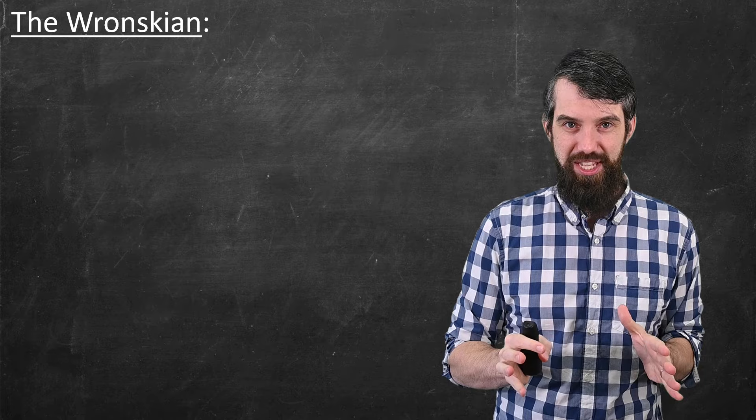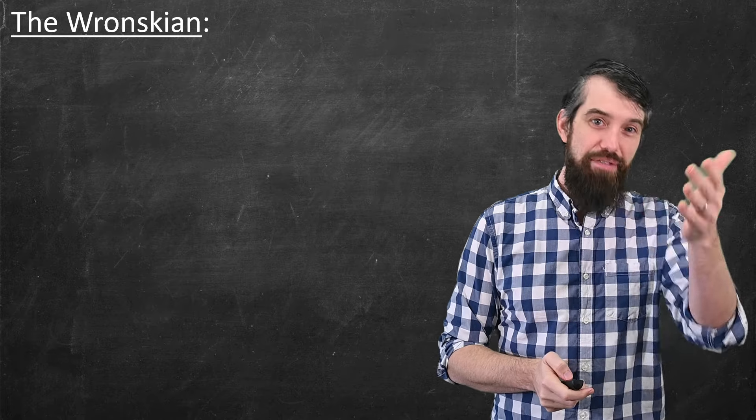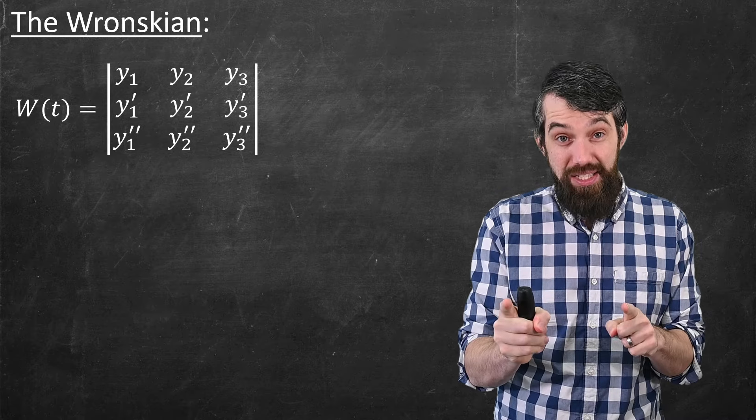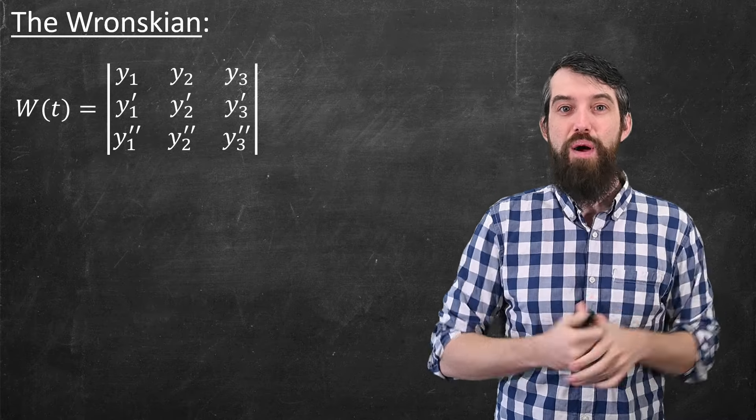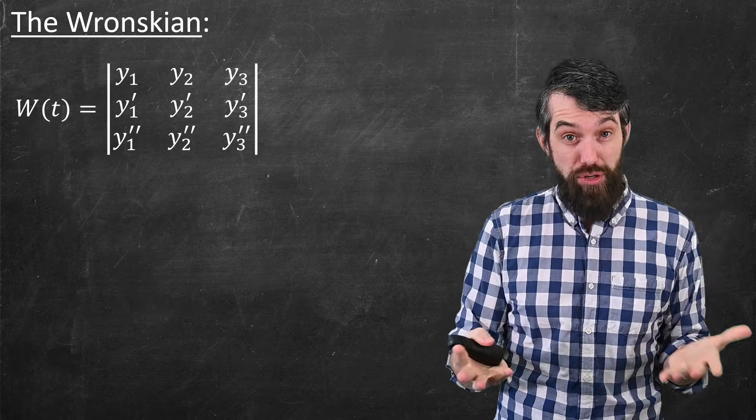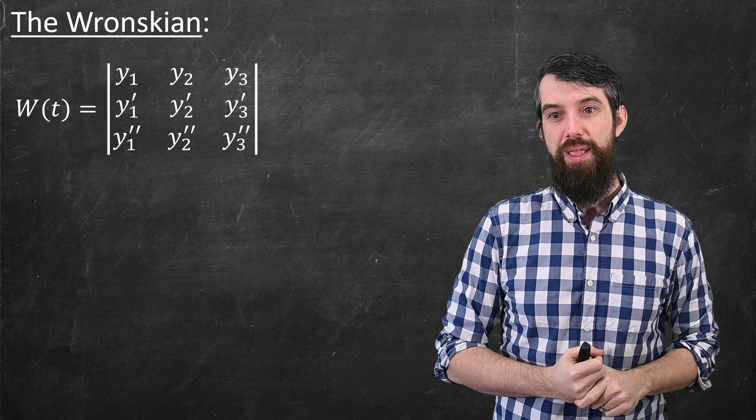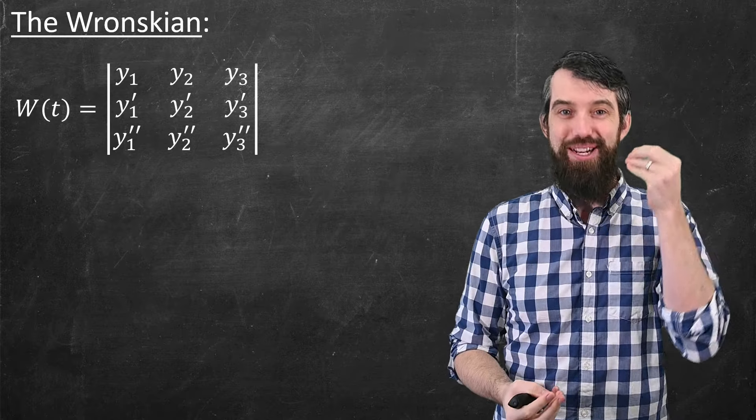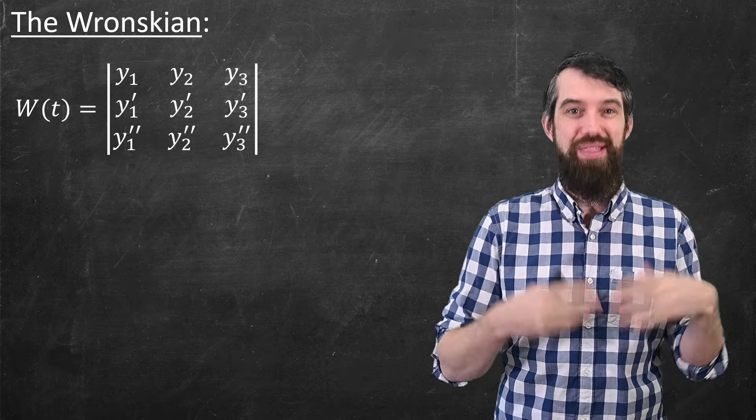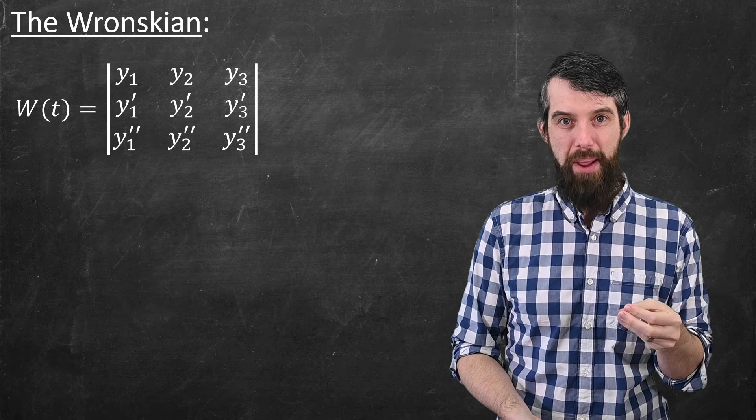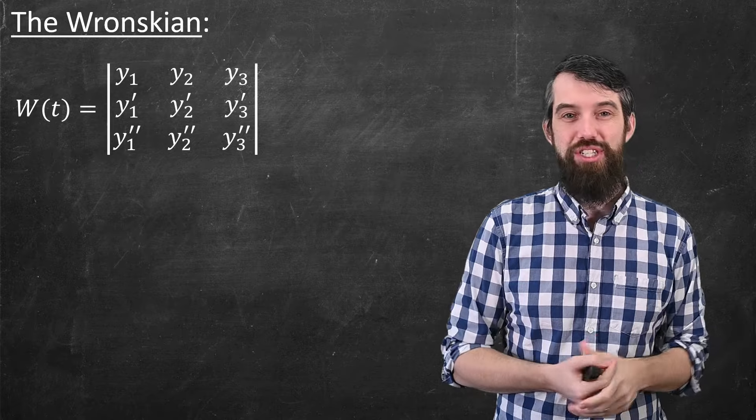So this is the Wronskian. It's kind of a funny thing. Imagine I have three different functions. The Wronskian of those three functions is the determinant of the following matrix. The first column is all about y₁: y₁, y₁', y₁''. The second is y₂, y₂', y₂''. And the third is all about y₃: y₃, y₃', and y₃''.